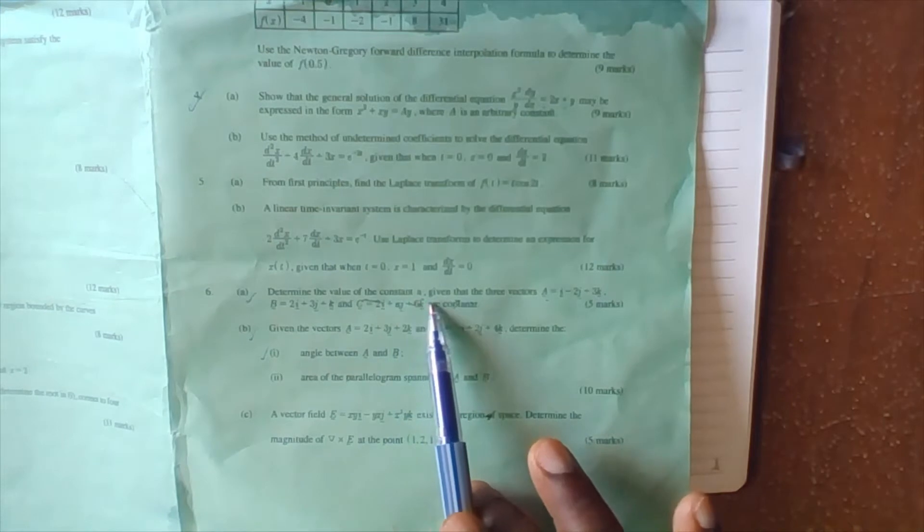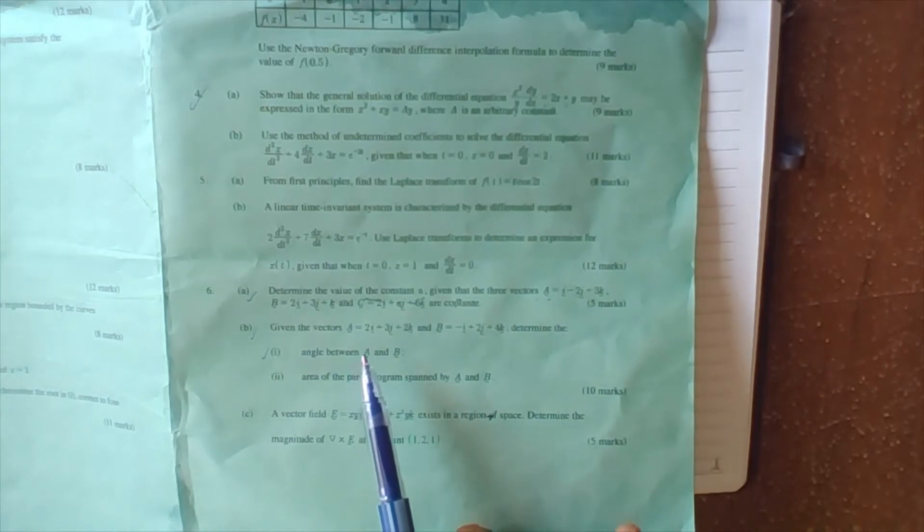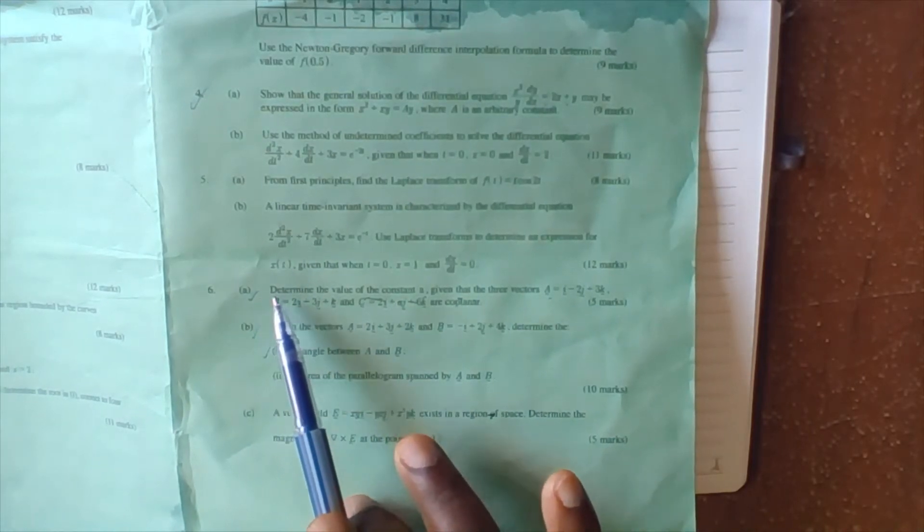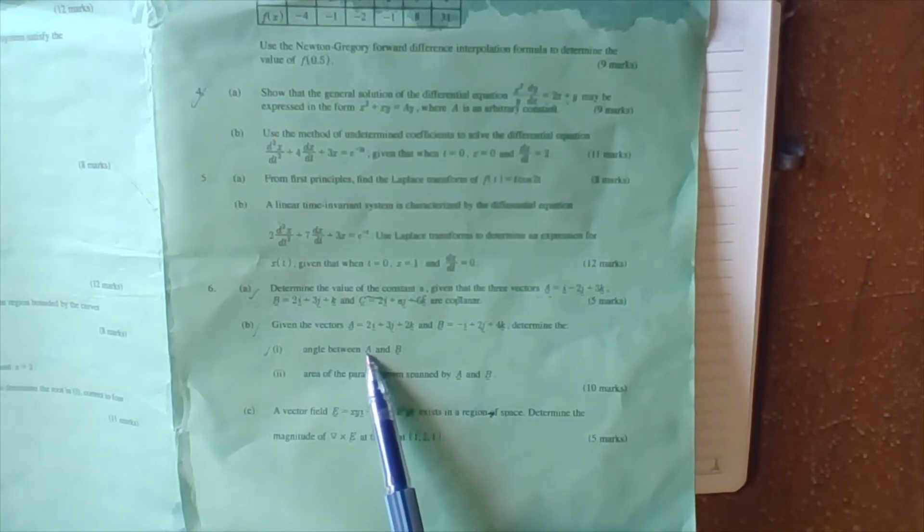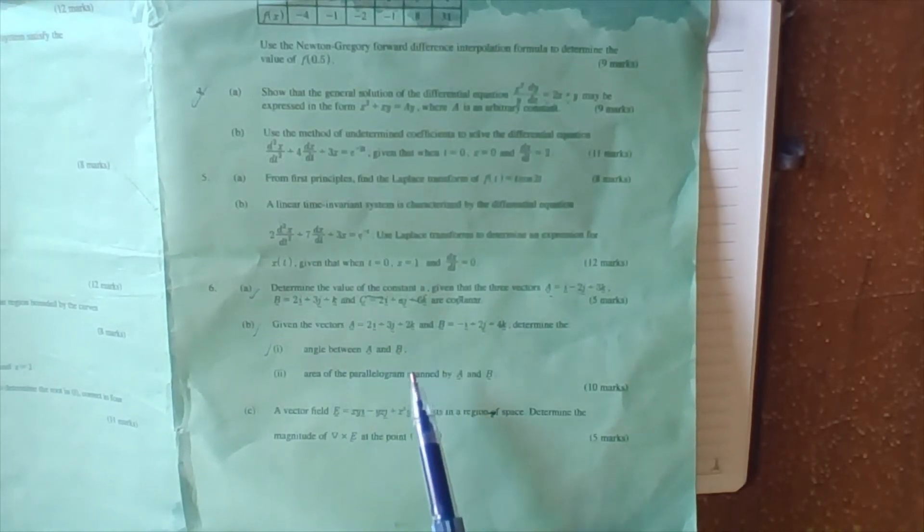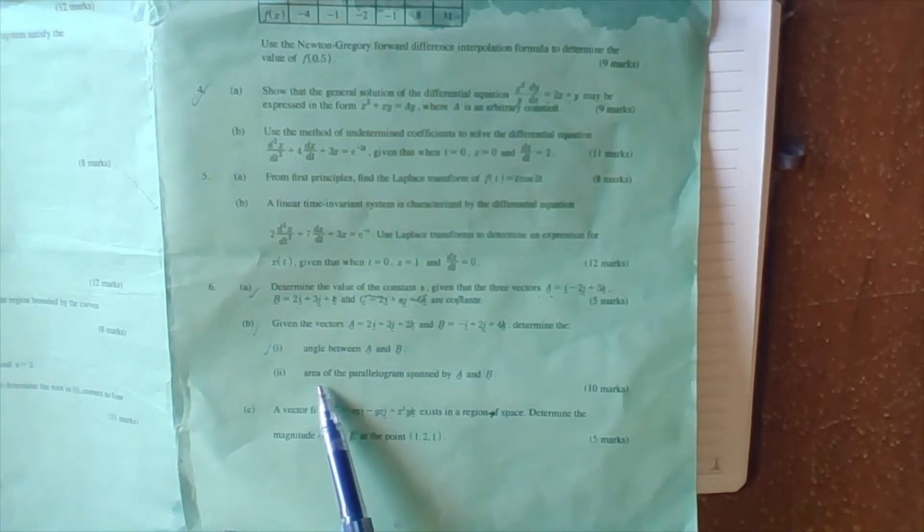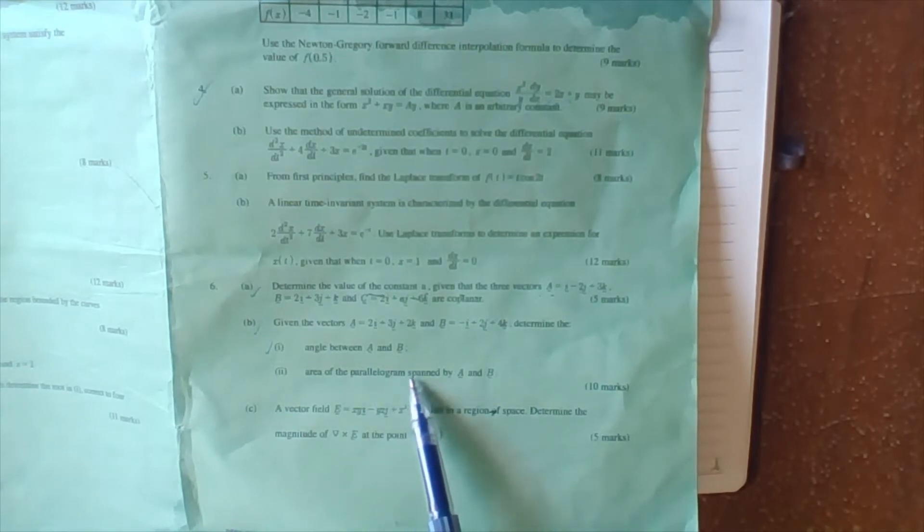Determine the value of the constant a given that the three vectors a, b, and c are given. We have already solved part 6a and 6b part one where we found the angle between a and b. What remains is part two, the area of the parallelogram spanned by vector a and b.